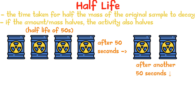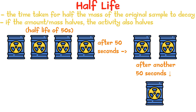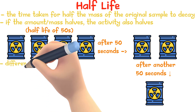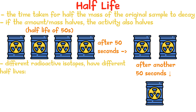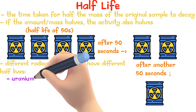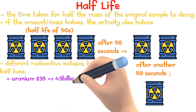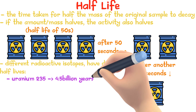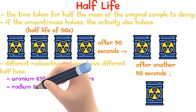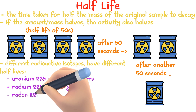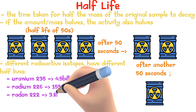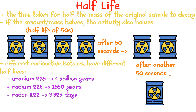After another 50 seconds, only 50 grams will remain, and so on. Different radioactive isotopes have different half-lives. For example, uranium-238 has a half-life of 4.5 billion years, radium-226 has 1590 years, and radon-222 has only 3.825 days of half-life.